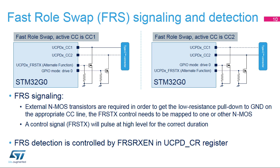The Fast Role Swap (FRS) protocol swaps the roles of DFP and UFP: the default power source node becomes the SYNC node and vice versa. To request an FRS to the source node, the SYNC device temporarily connects the appropriate CC line to ground, achieved by external NMOS transistors on both CC lines. However, only one will receive the FRSTX pulse; the NMOS on the inactive CC line should be driven with a logic zero using GPIO mode. The FRSRXEN bit in the UCPD_CR register controls FRS detection in the SYNC node — when set, FRS detection is enabled.